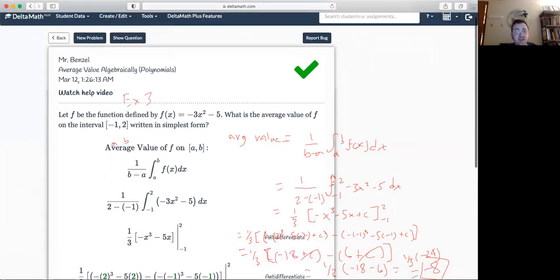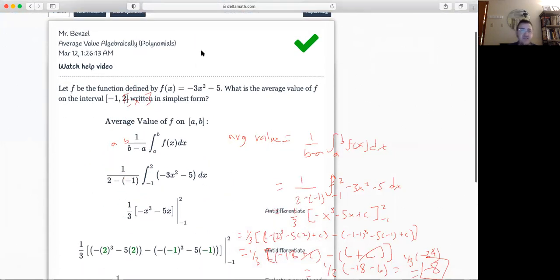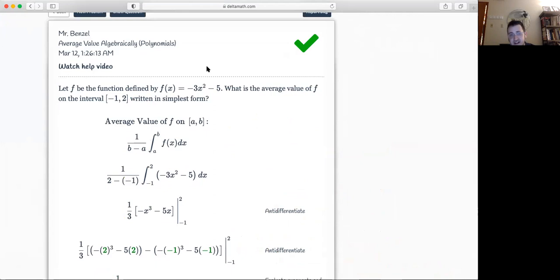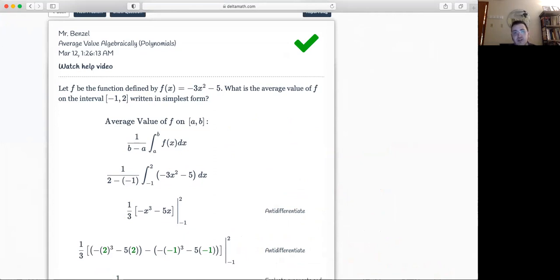Another thing that you could do is you could actually just do the definite integral like you did before on the last skill, and then you could just multiply by whatever your 1 over B minus A is. Just be aware that the most common reason why people get this type of problem correct or incorrect is just keeping track of the parentheses and the signs. And if you're able to do that, you'll be in pretty good shape with this skill.